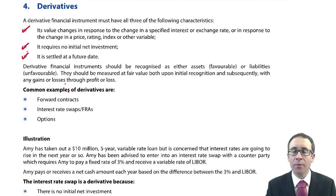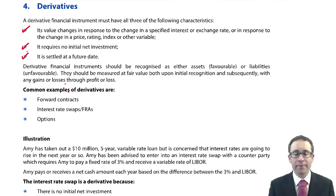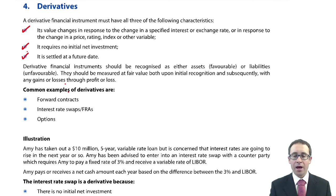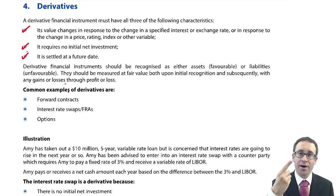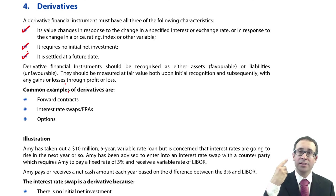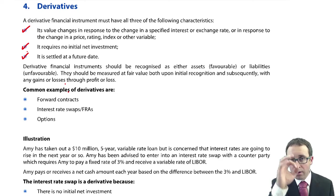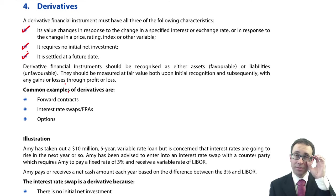If you're wondering why I'm talking about orange futures, go watch the film Trading Places — one of Eddie Murphy's better films. So to summarise, a derivative has to follow three criteria: the value has to change in response to the underlying item, it has to be settled at some point in the future, and it requires no or a very small initial net investment.